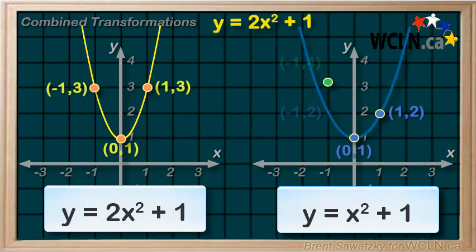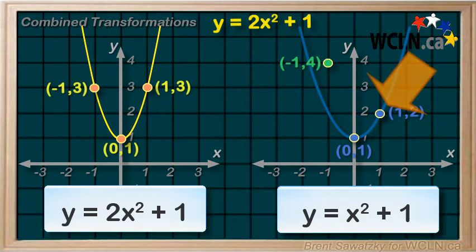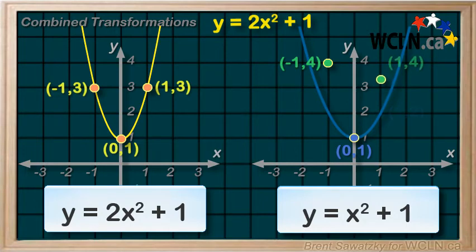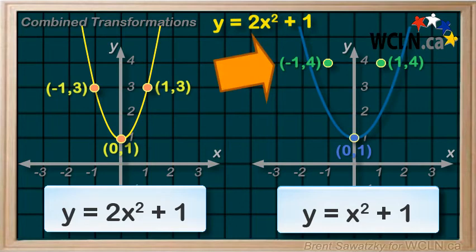and we get negative 1 comma 4. And for this point here, we multiply the y value by 2 and get 1 comma 4. And we look back at our previous attempt, and we can see that things are already looking different. These points are at 3, and these points are at y equals 4.